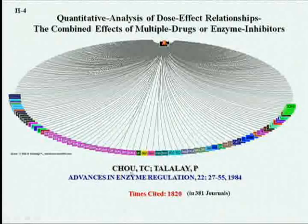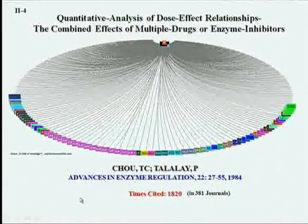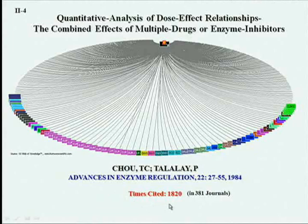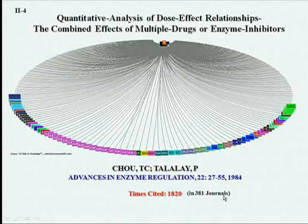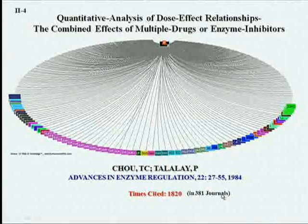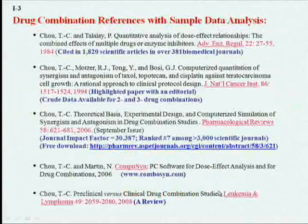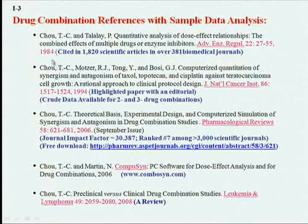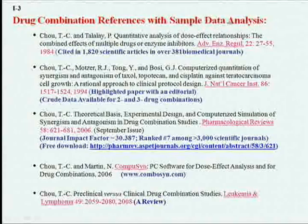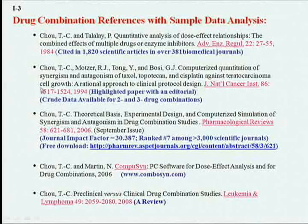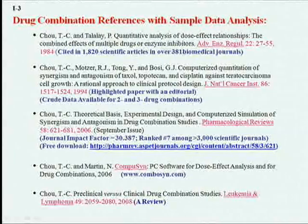The method of Chou and Talalay has been widely cited so far — 1,820 times in 381 different biomedical journals. Today I'm not going to spend too much time going through all the theories, but here you can find the theory as well as the application and the sample data analysis. These are major references with examples.